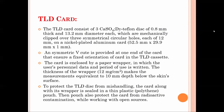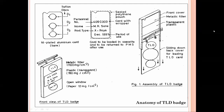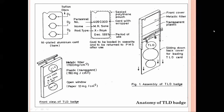The TLD consists of three calcium sulfate discs: D1, D2, and D3. These are placed in a plastic cassette with three holes, each having a diameter of about 12 mm. The discs have a diameter of 13 mm and are placed over these holes. The cassette is aluminum-coated and has a V-shape cut. Three filters are used: a metallic filter with copper and aluminum, a plastic filter of 100 mg/cm² area, and an open window.